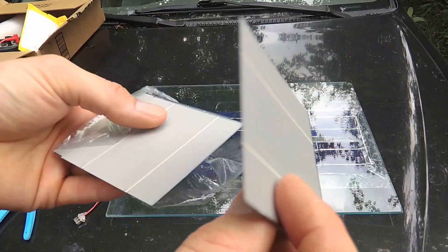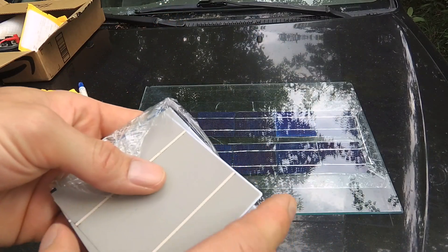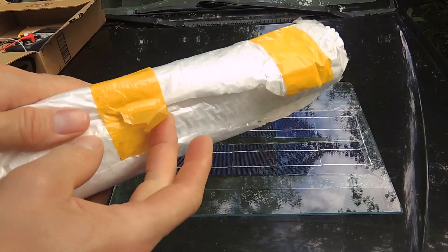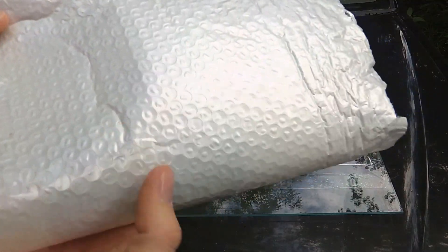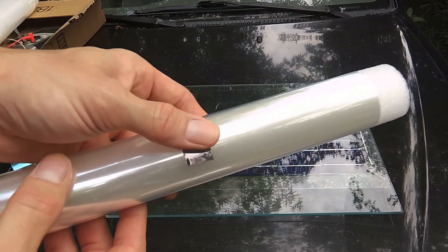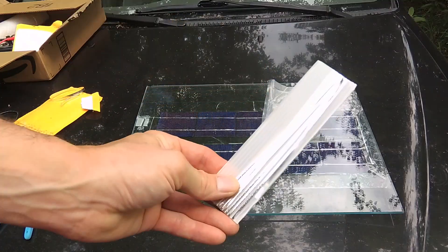They're 78 by 78 millimeter. Handle them pretty carefully because they are very fragile. Use this film here - it's a window film, a protective film for glass. You're going to need cells, tabbing wire...